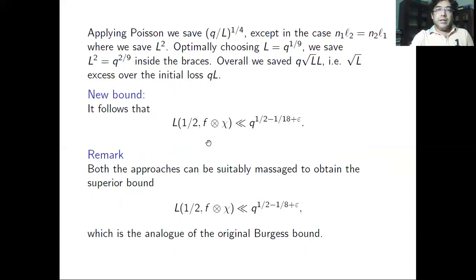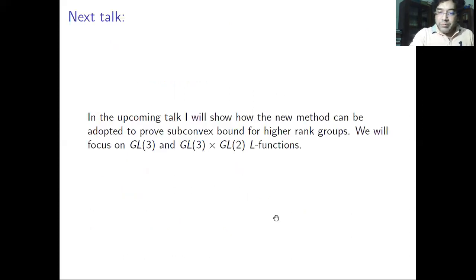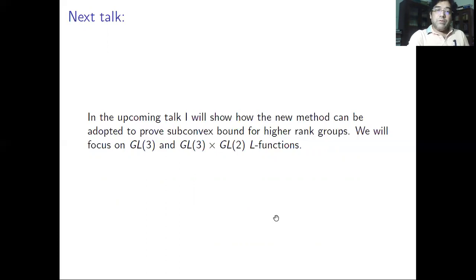Both methods can be further refined to obtain bounds analogous to Burgess in both cases. That was my plan: describe the summation formulas and give two different methods of proving subconvex bounds for a particular L-function. In the upcoming talk, I'll show how this new method of separation of oscillation proves subconvex bounds for higher-rank groups — specifically GL(3) automorphic forms and the Rankin–Selberg convolution for GL(3) × GL(2).